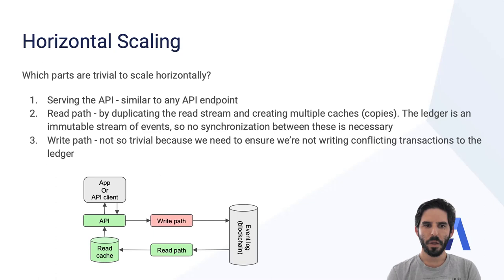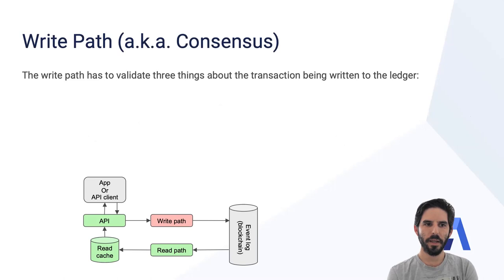The write path isn't so trivial because we need to ensure that we're not writing conflicting transactions to the ledger. We need to validate every transaction within the context of every previous transaction. So now let's dig into the write path.